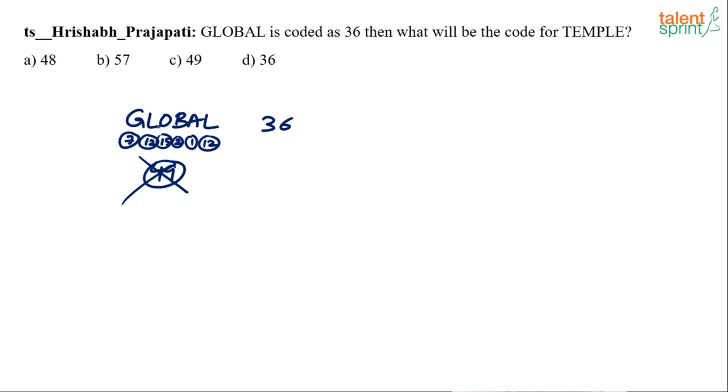The one thing that, again, I can think of is there are six letters here. Count of letters. 1, 2, 3, 4, 5, 6 and 36 actually is 6 squared. So, maybe the code of the given word is square of the number of letters in the word. So, in that way, if you have to find out the code for Temple, again, 6 letters, 1, 2, 3, 4, 5, 6. So, it should be 6 squared, 36 and it is there in the option. So, I will mark option D 36 in the exam.